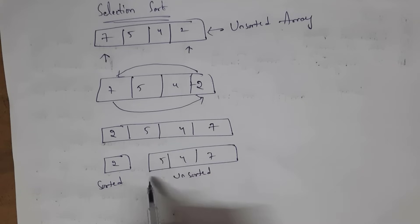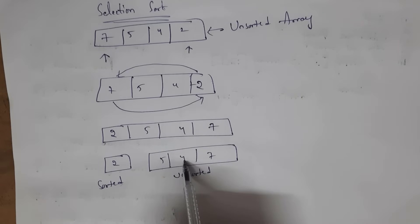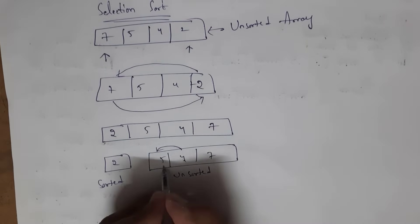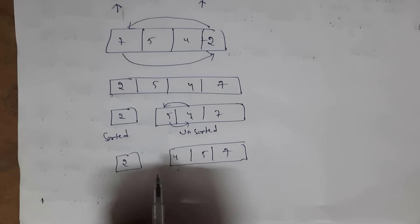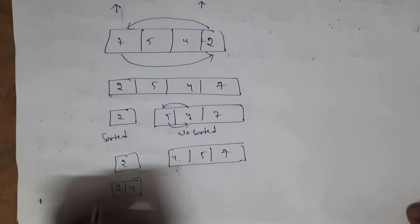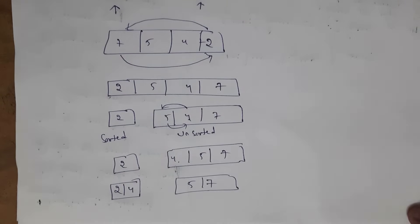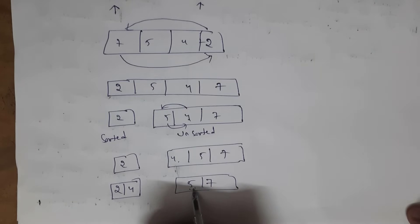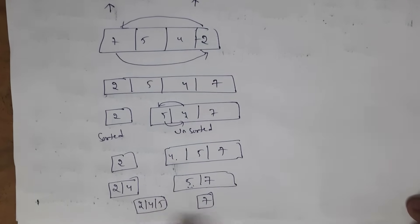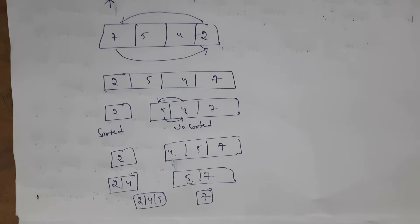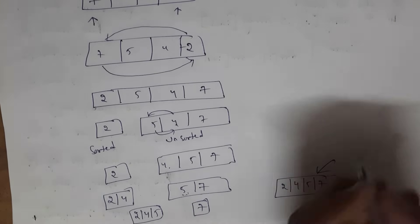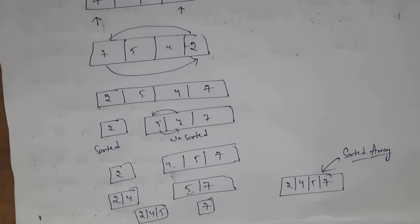From the unsorted array (five, four, seven), the minimum element is four. Place four at the beginning and put five in place of four, giving: two, four, five, seven. Now two and four are the sorted array, and five, seven is unsorted. The minimum of the unsorted part is five, which is already at the beginning. Move five to sorted: two, four, five. Finally, move seven into sorted. The result is: two, four, five, seven — fully sorted.